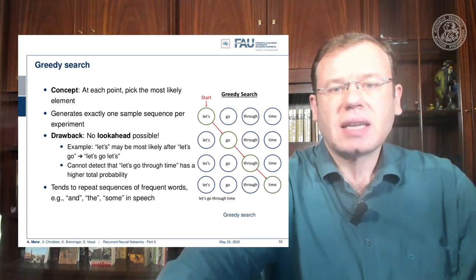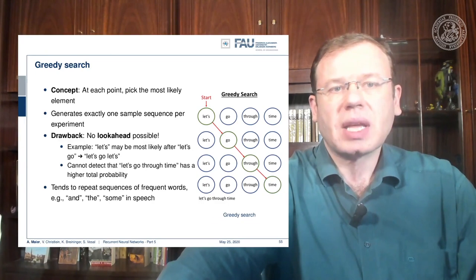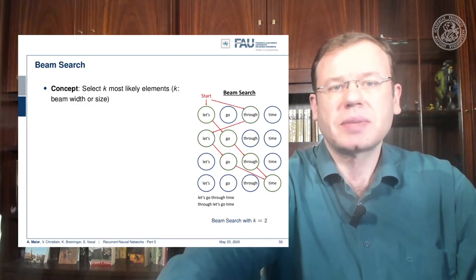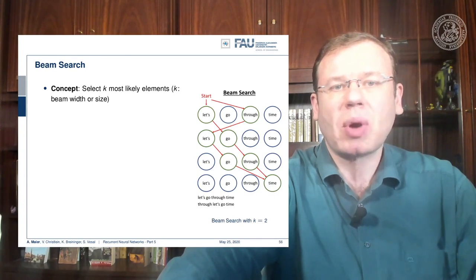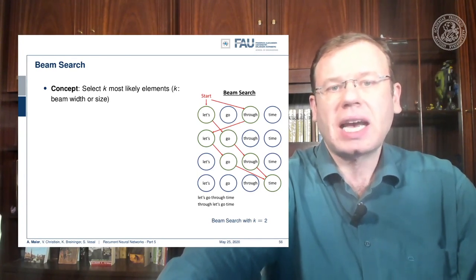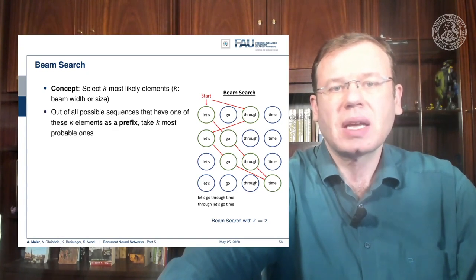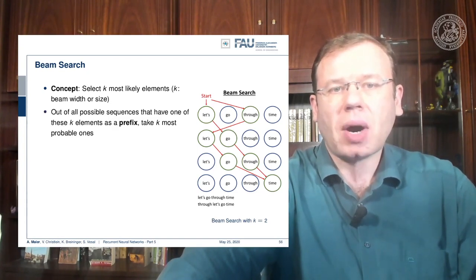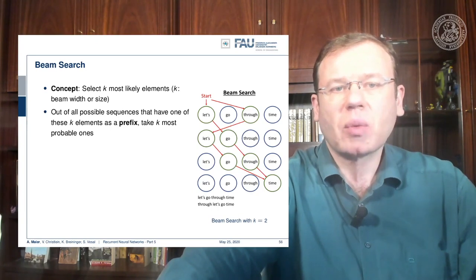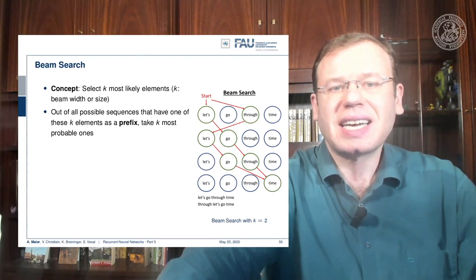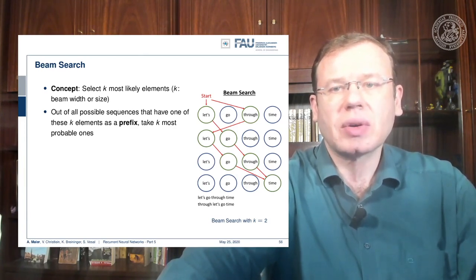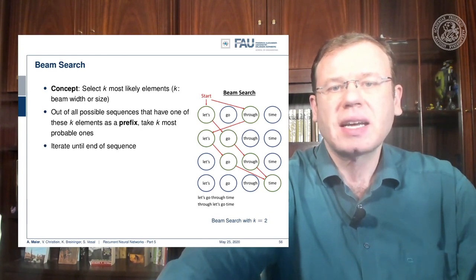Now we are interested in alleviating this problem, and this can be done with a beam search. The beam search's concept is to select the k most likely elements, and k is essentially the beam width or size. Here you then out of all possible sequences have the one with these k elements as prefix and take the k most probable ones.